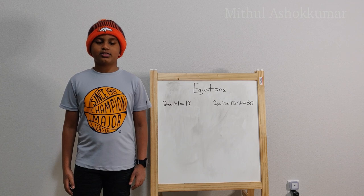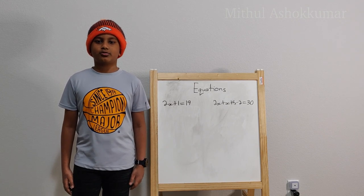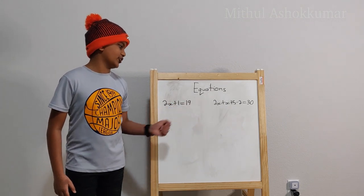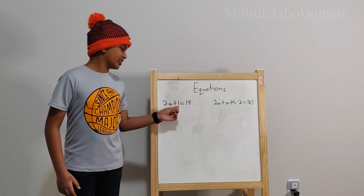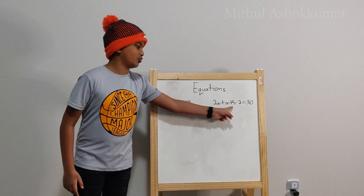What is an equation? An equation is a mathematical statement in which two sides are equal. As you can see on the board, I have two examples of equations. This one is a simple equation and this one is more of a complex one.